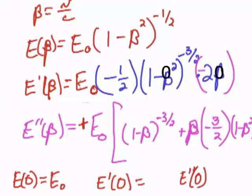E prime of 0, we're going to put a 0 in here, and a 0 in here, because the 0 is multiplied by everything, this is going to be 0. And E double prime of 0 is going to be E sub 0 times this, which is just going to be 1. I think I left out a squared there.